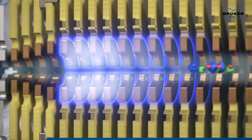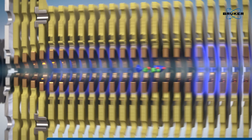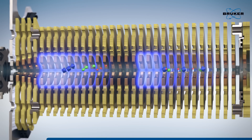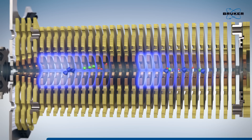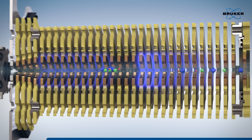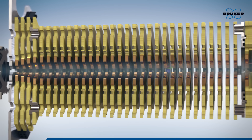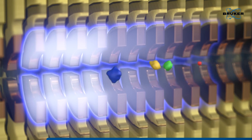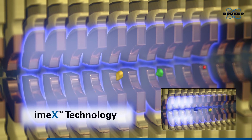While the ion mobility separation takes place in the second section of the TIMS tunnel, new ions are collected in the first section. This increases the overall duty cycle by up to 100%. If a first scan reveals unresolved or overlapping peaks, the area of interest can be magnified in the TIMS tunnel.